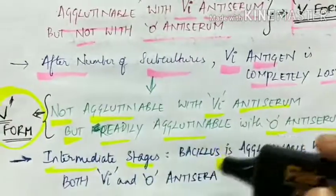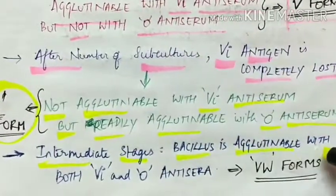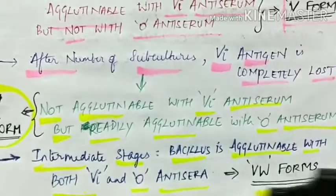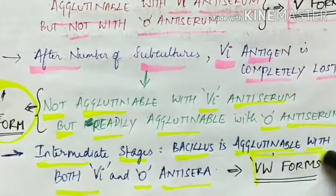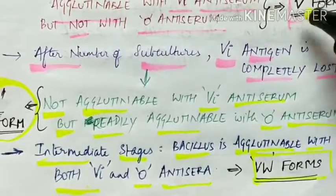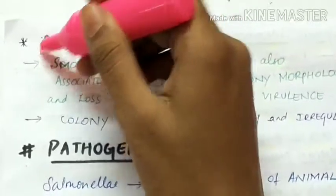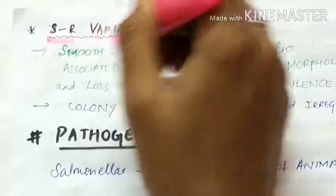In intermediate stages, the bacillus is agglutinable with both Vi as well as O antiserum. Such forms are called as VW forms.